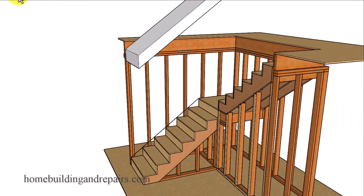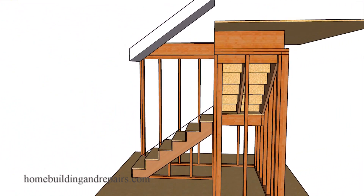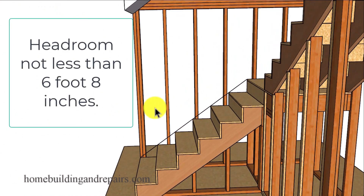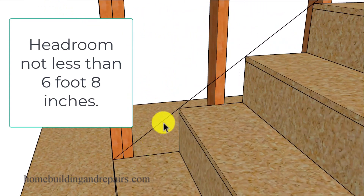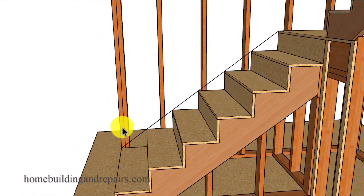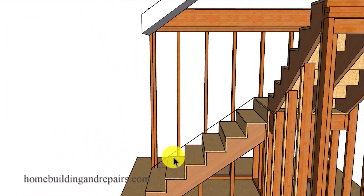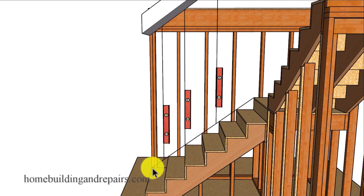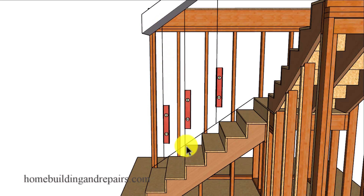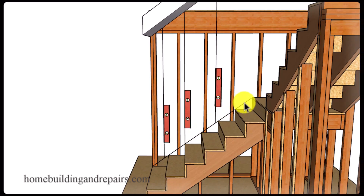The next code on the list will be the minimum headroom height. That line will be measured from the front of each step, but it will not be measured from the top of the step or any other part of the step. You're going to go straight up — plumb, or vertically. And again, it can be measured from the front of each step or from this line here.